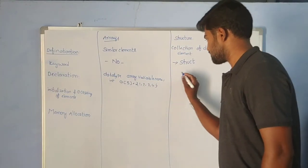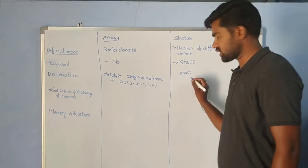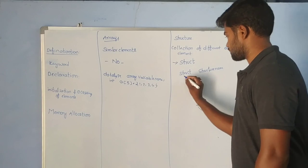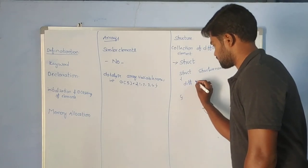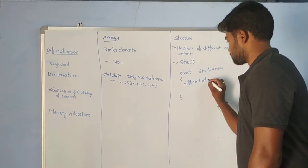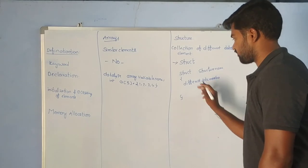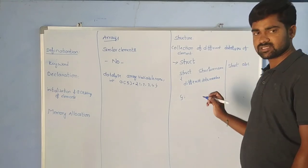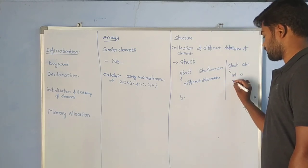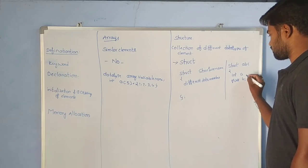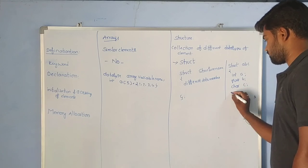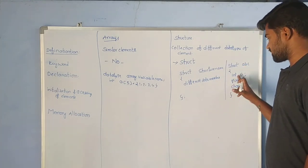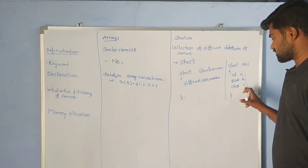What is the declaration of a structure? We use the keyword 'struct' followed by the structure name, and inside we define different data members — and every structure definition must end with a semicolon. For example: struct ABC { int A; float B; char C; }. Here 'ABC' is the structure name, A is integer, B is float, and C is character.